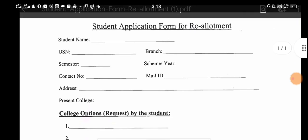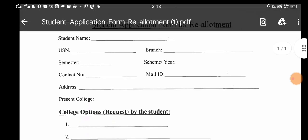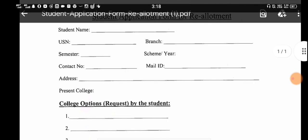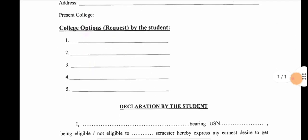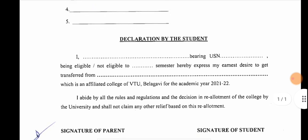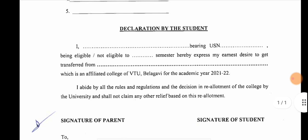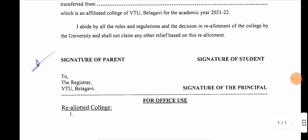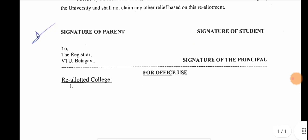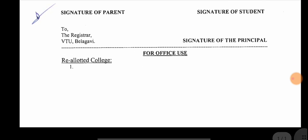If you have the name, U.S. semester, contact number, address, branch, and president college filled in, you can choose the option. You will need the signature of the student, the signature of the principal, the VT option, and the re-allocated college details.